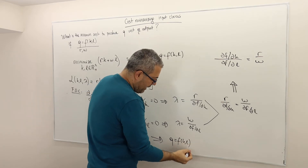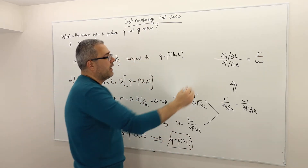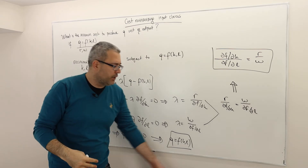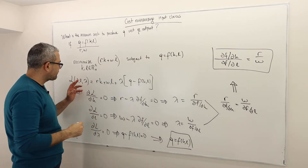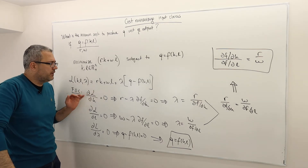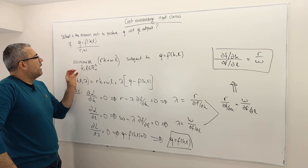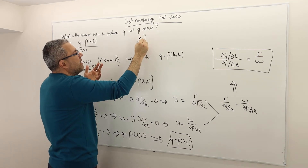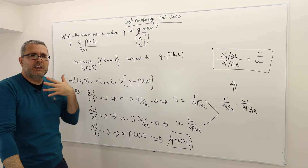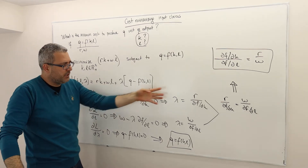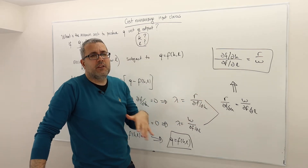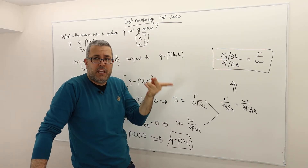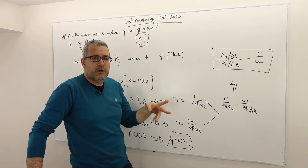We also have the constraint Q equals F of KL. So we have two equations and two unknowns. We eliminate the unknown lambda — the Lagrange multiplier — since we don't need its value. All we care about is how much K and L we need, and so we have two equations and two unknowns K and L that we can solve.